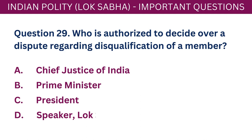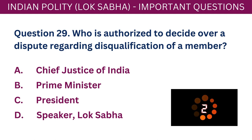Question 29: Who is authorized to decide over a dispute regarding disqualification of a member? A. Chief Justice of India. B. Prime Minister. C. President. D. Speaker of Lok Sabha. The correct answer is D - Speaker of Lok Sabha.